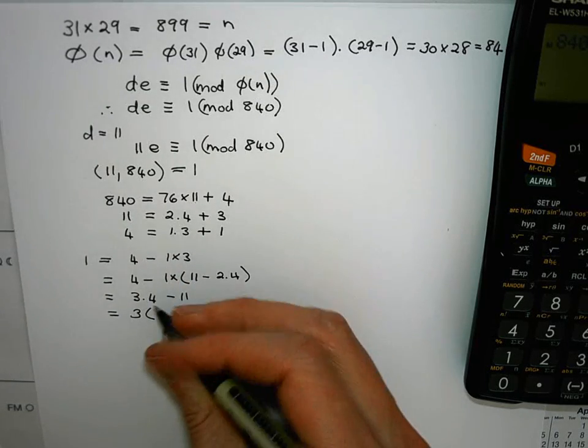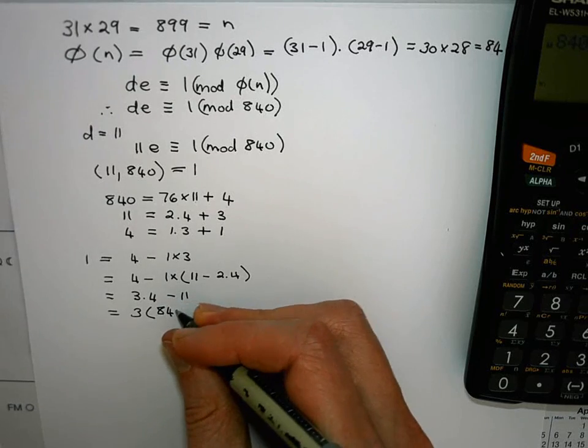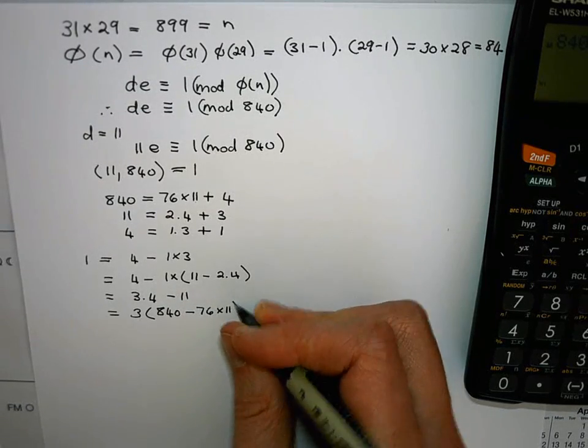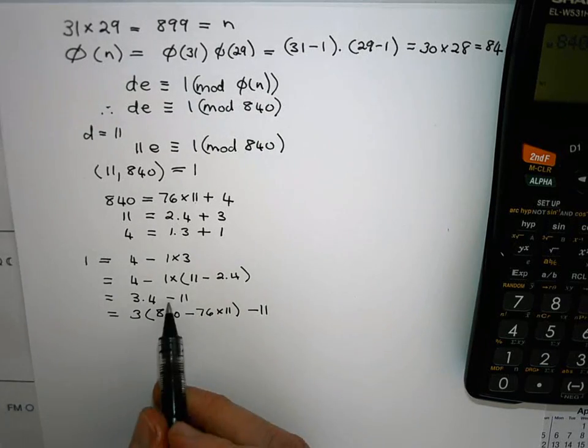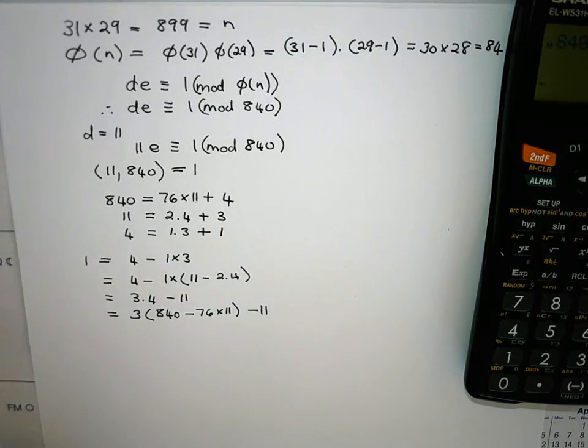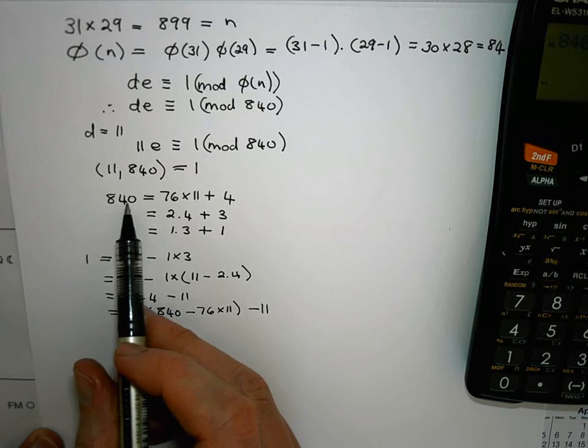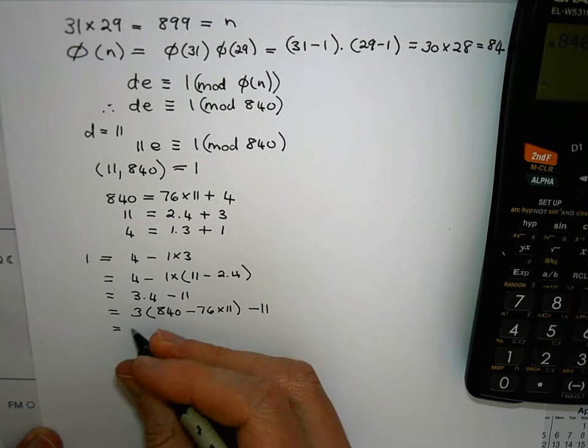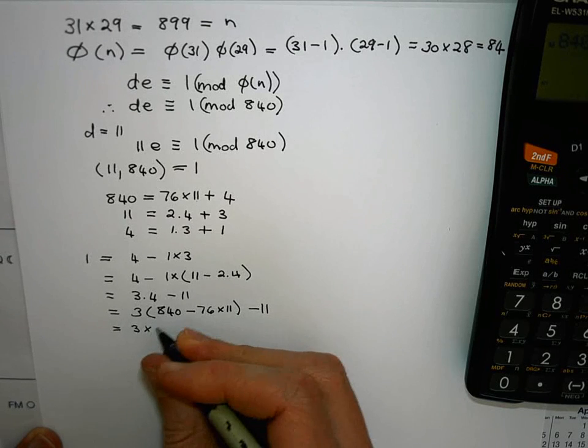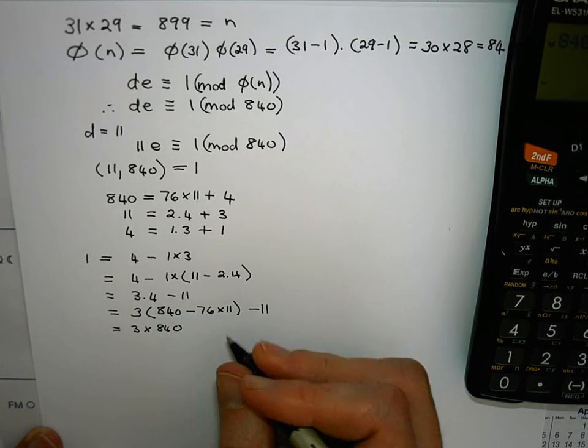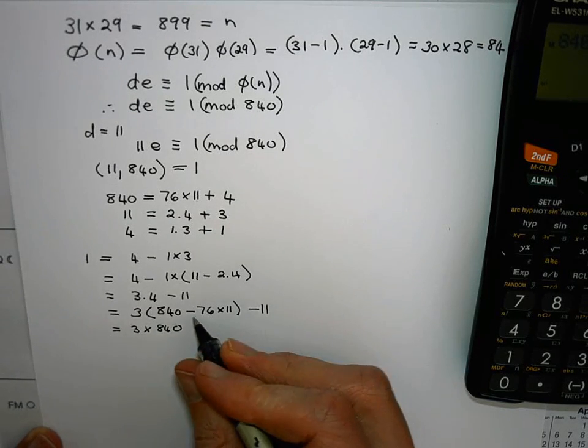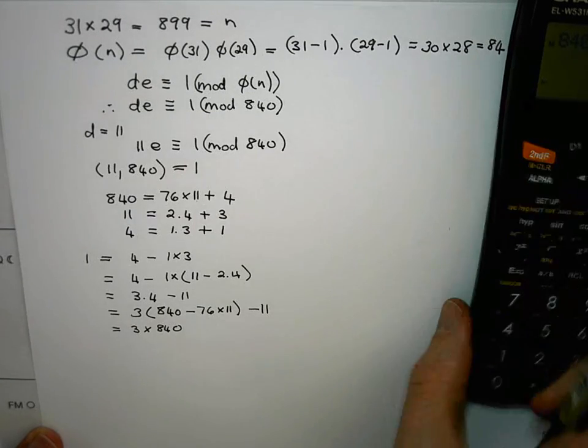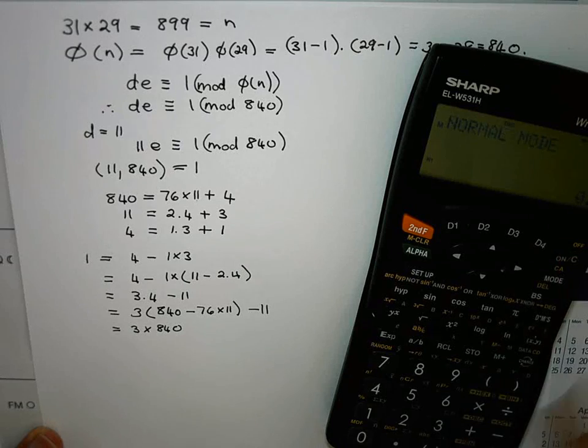So this thing tells me I can write 4 as 840 minus 76 times 11 and don't forget that minus 11 there. So let's collect 840 terms and 11 terms together. This gives me 3 times 840. This is minus 3 times 76 times 11 minus 11.